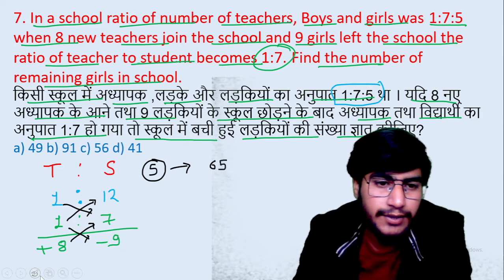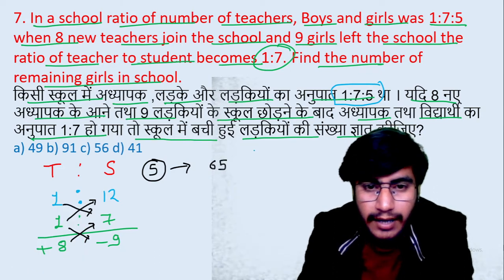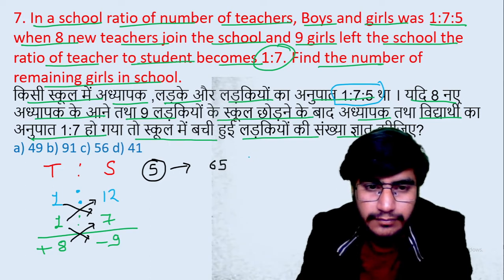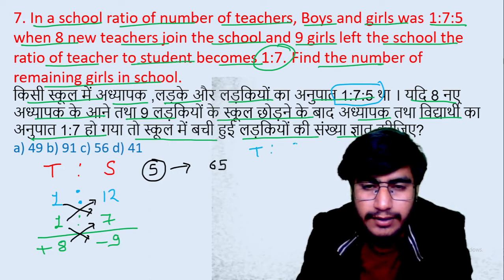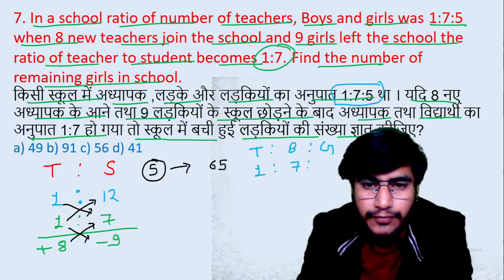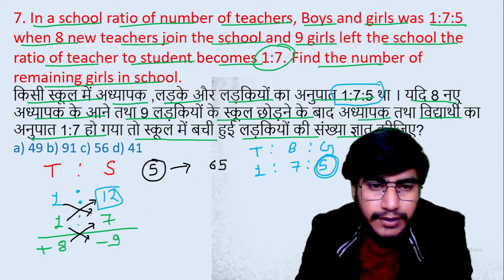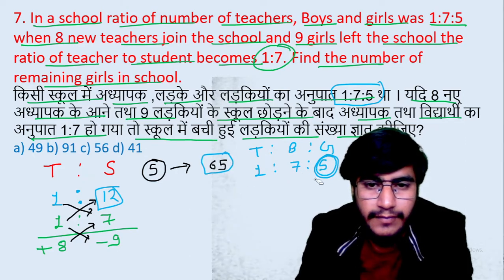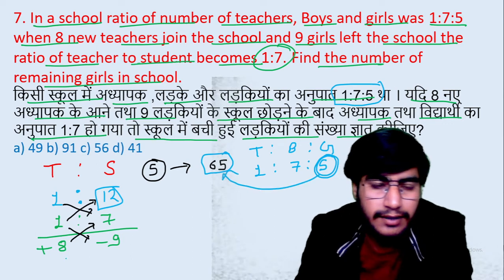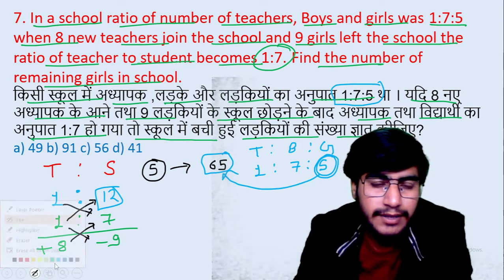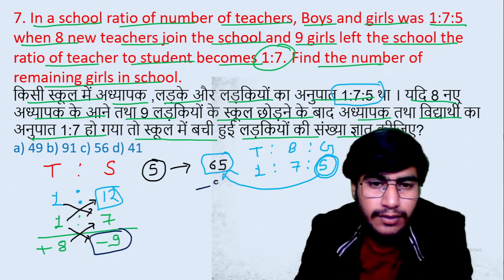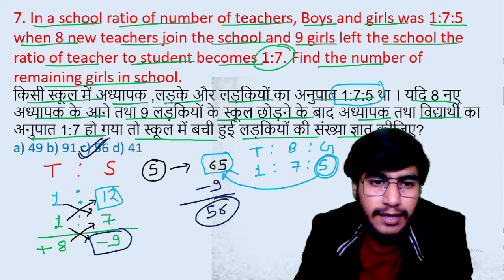5 unit ka matlab kya aa gaya? 65 aa gaya. Aapan se kya poocha? Number of girls finally. Initial ratio kya tha? Teachers, boys, aur girls — 1 ratio 7 ratio 5. To girls kitni thi initially? 5 unit thi. Yahaan pe 12 unit students hain aur initially girls 5 unit thi, matlab initially girls kitni hain? 65. Initial girls ki value aa gayi — 65. Ab final mein change kya hoga? Final mein 9 girls chali gayi hain, to isme se 9 minus karte hain. Kya aayega? 56. To final number of girls aa jaayega — 56.